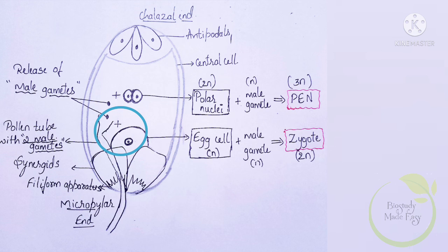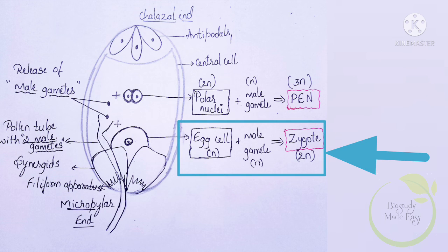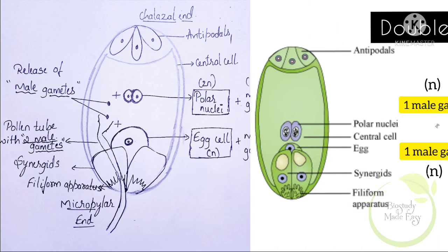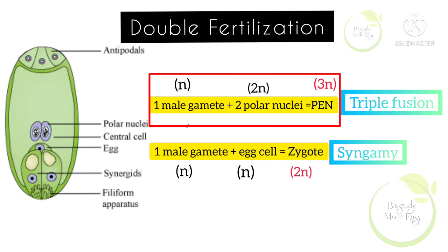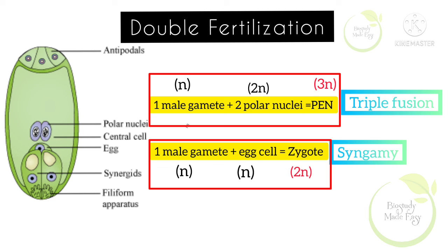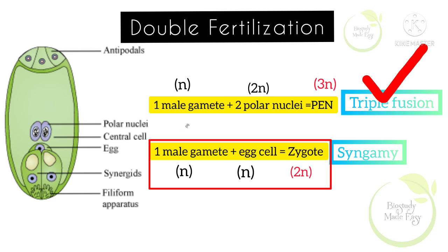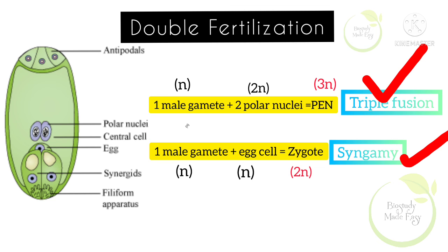Next, the second male gamete fuses with the egg cell. The egg cell is haploid, and the male gamete is also haploid. So two haploid cells fuse together, resulting in zygote formation. The zygote is diploid. This is the second fertilization. So one male gamete fuses with the polar nuclei to form the primary endosperm nucleus, and the other male gamete fuses with the egg cell to form the zygote — this fusion with the egg cell is called syngamy.